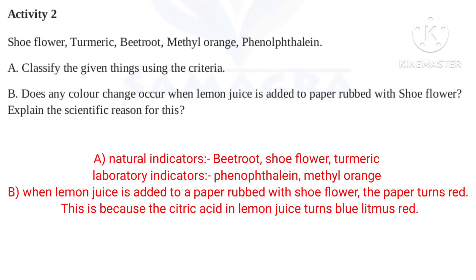Natural indicators: shoe flower, turmeric, beetroot, orange. Laboratory indicators: phenolphthalein.